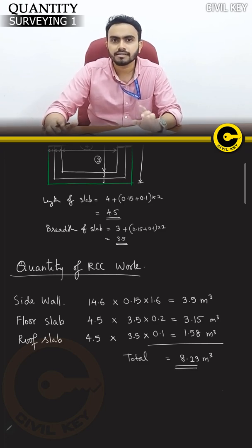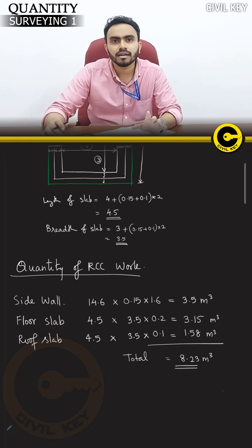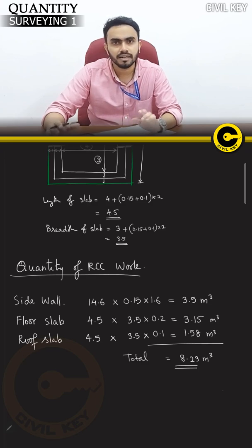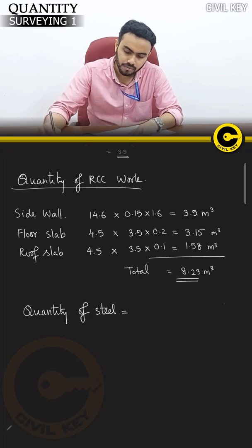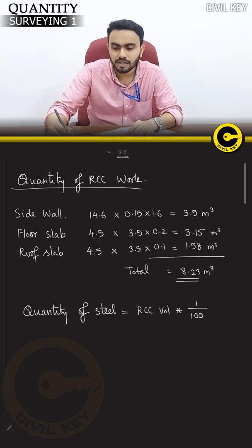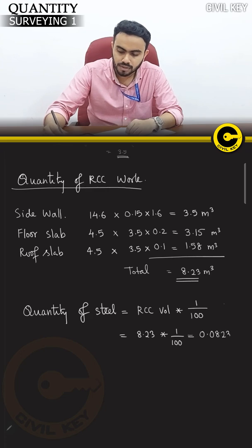Now let's calculate the total volume of concrete and the volume of steel. The quantity of steel equals 1% of the total RCC volume. RCC volume equals 8.23 × 1/100 = 0.0823m³.